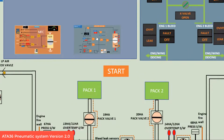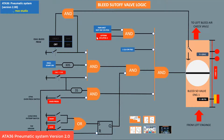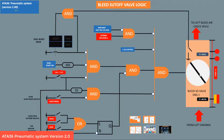This is the bleed valve over. This is the over pressure switch, and these two switches are the over temperature switches. This is also controlled by the bleed press button switch - press: bar open, close. No fault.